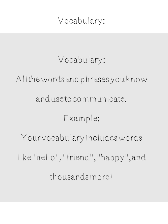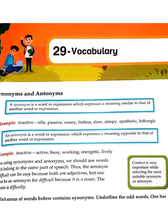Your vocabulary includes words like hello, friend, happy, and thousands more. The first thing in this chapter is synonyms and antonyms. Synonyms is a word or expression which expresses a meaning similar to that of another word or expression.